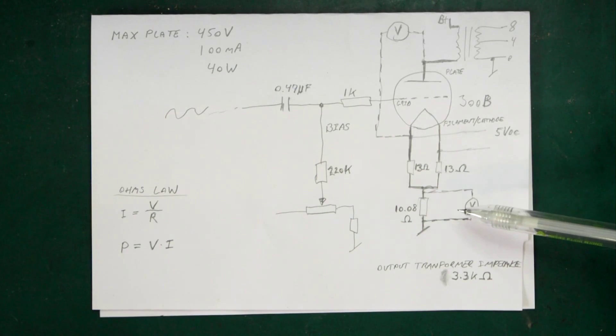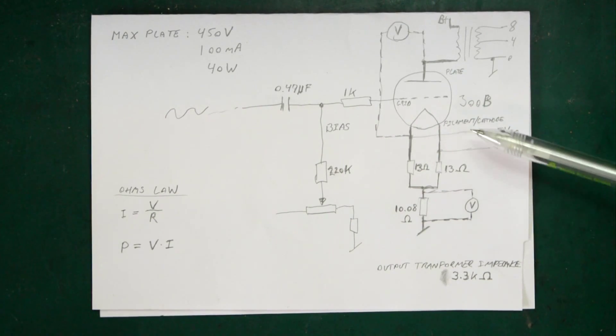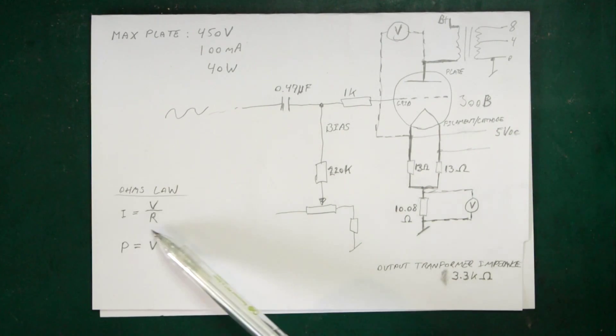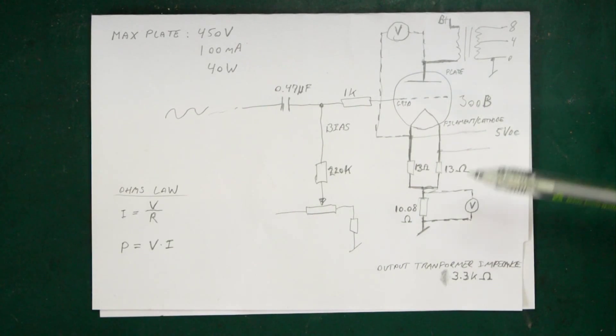So what we want to measure is to get the plate current, we need to measure the voltage drop across this resistor. So if we add a voltmeter across here, so I've measured this resistor, it's 10.08 ohms. And if we know the resistance, and we know the voltage drop, then we can just use Ohm's law here, and we'll get the plate current.